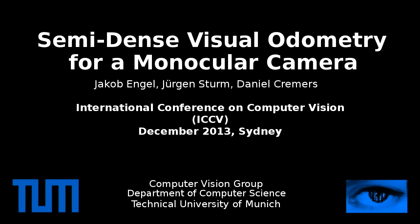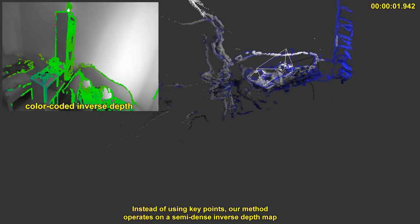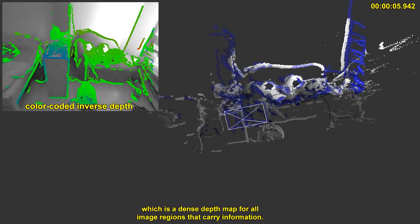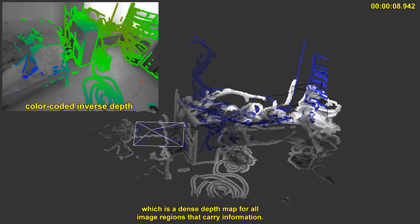We present a novel, semi-dense approach to monocular visual odometry. Instead of using keypoints, our method operates on a semi-dense inverse depth map, which is a dense depth map for all image regions that carry information.